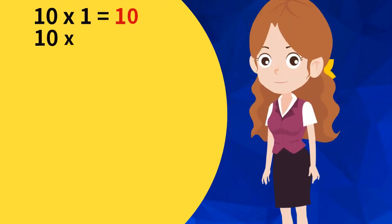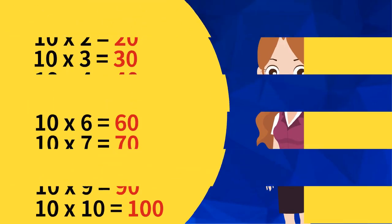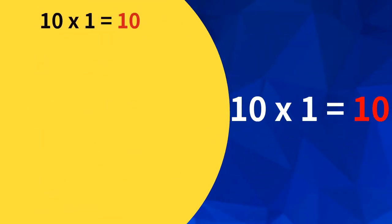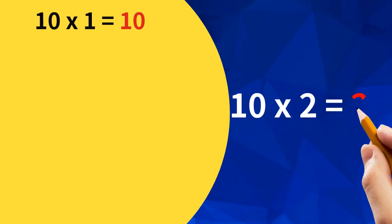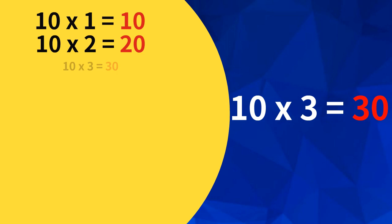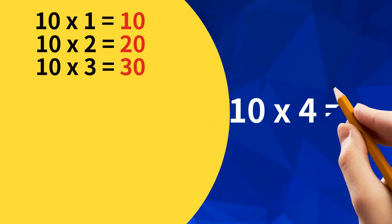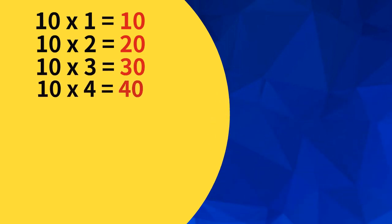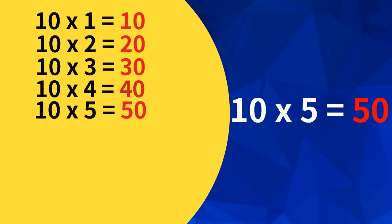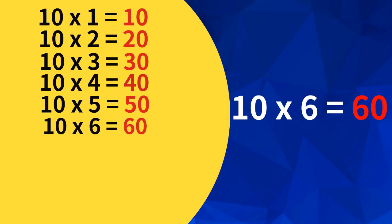Now Let's Speak Together. Ten Ones Are Ten. Ten Twos Are Twenty. Ten Threes Are Thirty. Ten Fours Are Forty. Ten Fives Are Fifty. Ten Sixes Are Sixty.